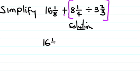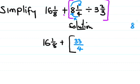We have 16 1/8 plus, and in brackets we need to divide. We need to change this to an improper fraction. 8 times 4 is 32, plus 1 is 33, so we have 33/4. Then 3 times 3 is 9, plus 2 gives 11, so 3 2/3 becomes 11/3.